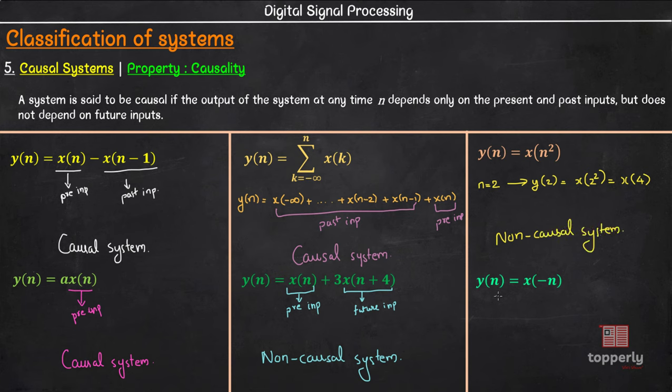Lastly, we have y of n equal to x of minus n. Here also, let us see what will be the input for n equal to minus 1.